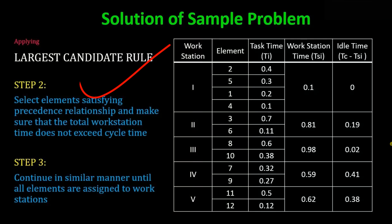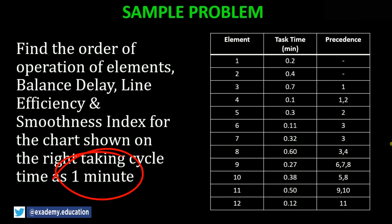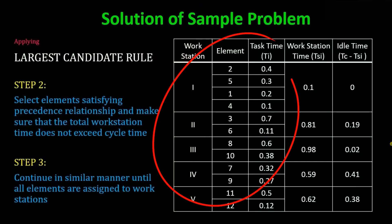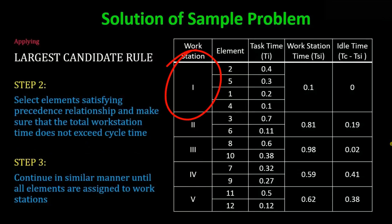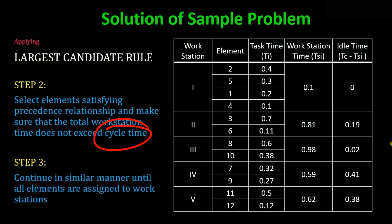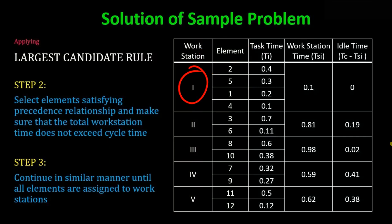Moving to Step 2: we need to select elements satisfying the precedence relationship while making sure the total workstation time does not exceed the cycle time. The cycle time given to us is one minute. We'll pick elements one by one and club them into workstations such that the total time within each workstation stays within one minute.